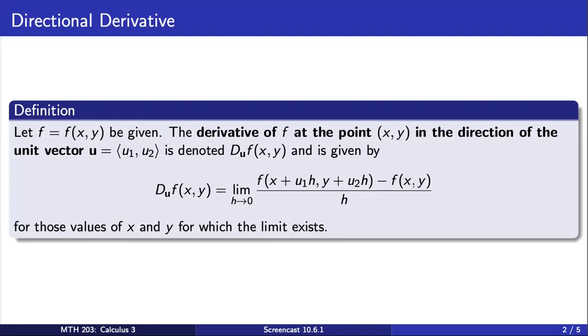Jumping right in, the derivative of f at a point (x,y) in the direction of the unit vector u is denoted by D_u f(x,y), and is given by the following limit. We insist on u being a unit vector so that this directional derivative measures the change in f per unit change in the direction of u.